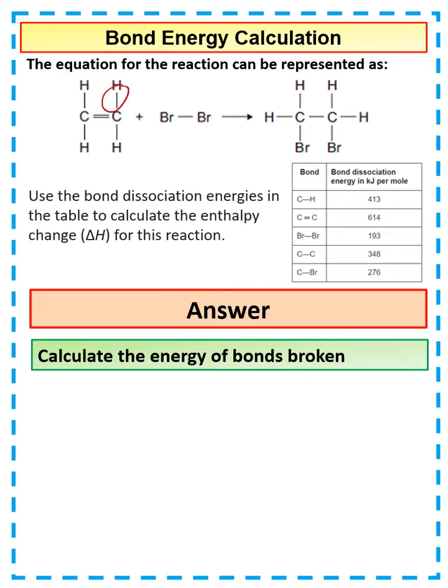So we've got 1, 2, 3, 4 lots of CH bonds. We've got 1 C double bond C. And we've got 1 Br single bond Br bond.